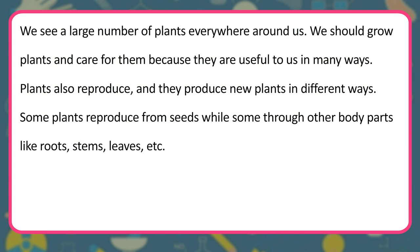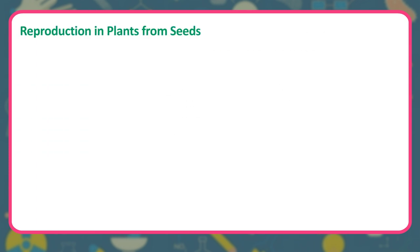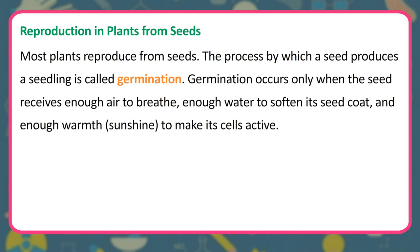Plants also reproduce, and they produce new plants in different ways. Some plants reproduce from seeds while some reproduce through other body parts like roots, stems, leaves, etc. Most plants reproduce from seeds. The process by which a seed produces a seedling is called germination. Germination occurs only when the seed receives enough air to breathe, enough water to soften its seed coat, and enough warmth and sunshine to make its cells active.